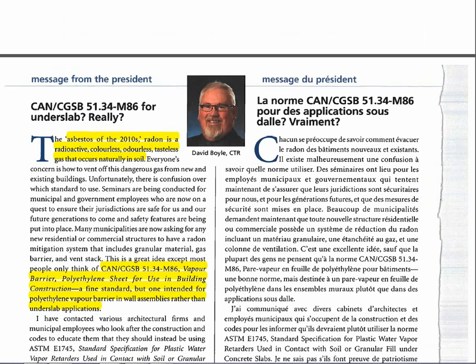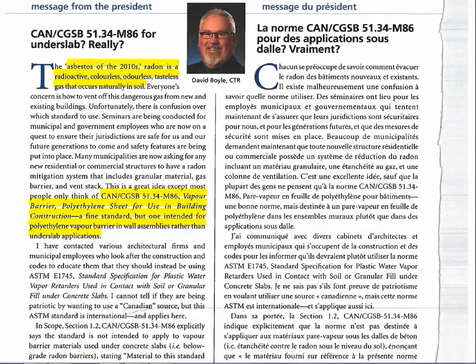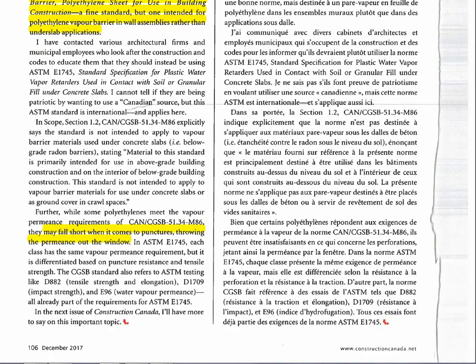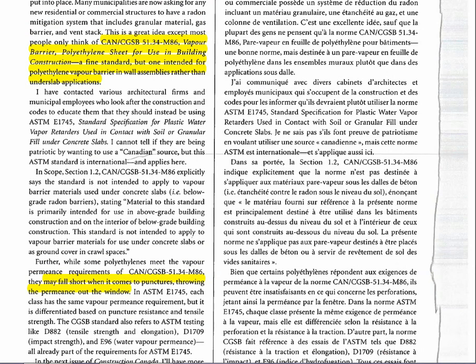In one of these articles, he's talking about radon as the new asbestos of the 2010s. He goes on saying that the standard for polyethylene sheet in building use is CGSB 51.34 M86, which is a Canadian General Standards Board standard. But then as you go down in the article a little farther, you realize that that standard is a retired standard, which is no longer in effect.